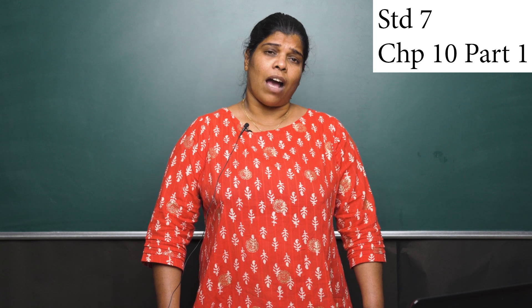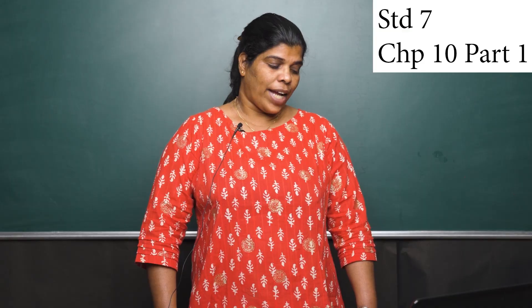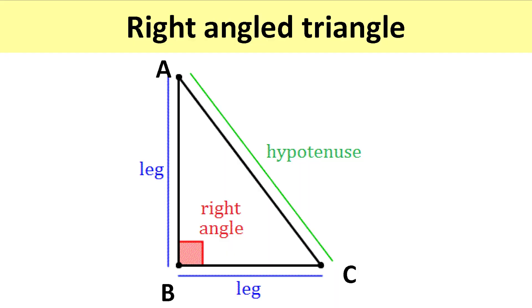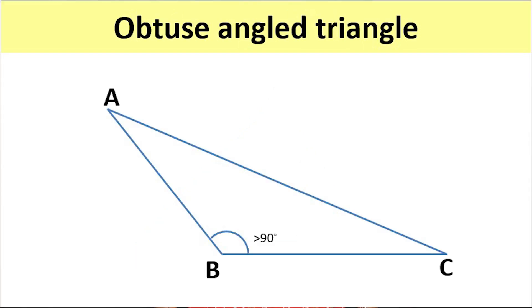Triangles are also classified as right angle triangle, wherein one angle is 90 degrees, acute angle triangle, wherein each angle is less than 90 degrees, obtuse angle triangle, wherein one angle is more than 90 degrees.